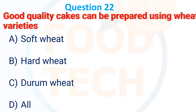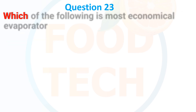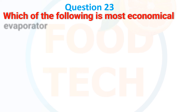Next MCQ: Good quality cake can be prepared by using which wheat variety? Options: (A) Soft wheat, (B) Hard wheat, (C) Durum wheat, (D) All of the above. The correct answer is A — soft wheat.